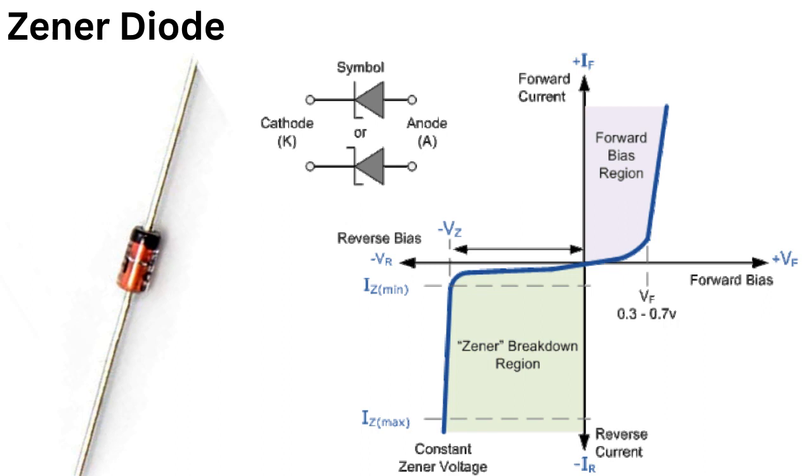The Zener voltage of a Zener diode is affected by temperature changes. The Zener voltage of a diode is directly proportional to the temperature. This means that as the temperature increases, the Zener voltage also increases, and as the temperature decreases, the Zener voltage decreases.